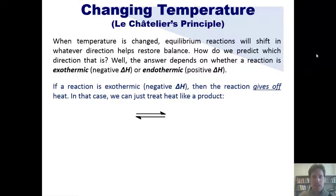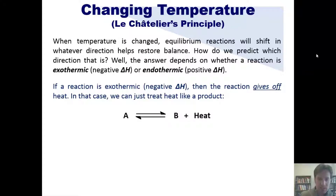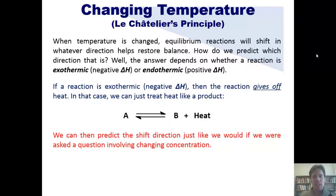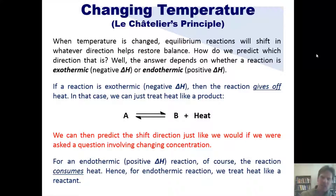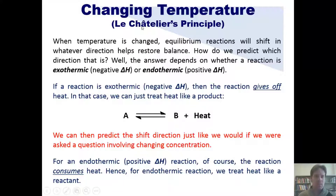If a reaction is exothermic — that is, it has a negative delta H — then the reaction gives off heat. In that case, we treat heat just like a product. For an endothermic reaction, one with a positive delta H, the reaction consumes heat, so we treat heat like a reactant by writing heat on the left side of the equation.